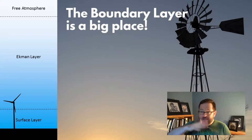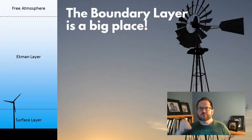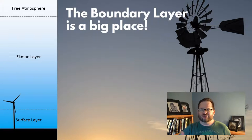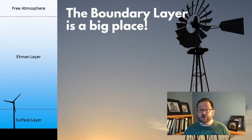The free atmosphere is most of the atmosphere. But the lowest one kilometer, maybe two or three kilometers — your textbook says as much as four kilometers — makes up what is called the boundary layer.